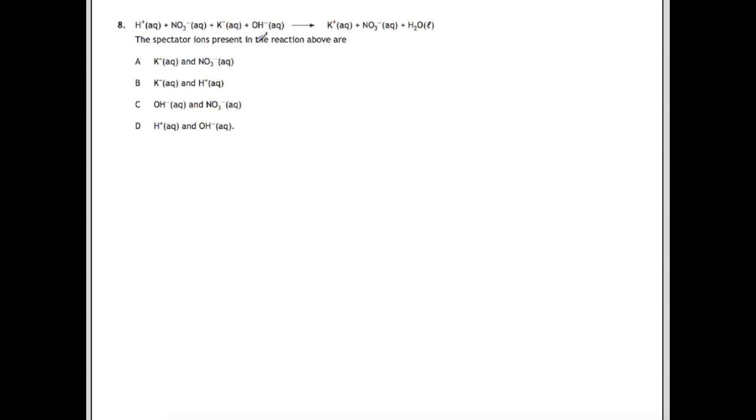Question eight. The spectator ions and the reaction above are. For spectator ions you're looking for things which are identical on each side of the arrow including their state symbols. Take each of them in turn and try and find them on the other side. We have H plus aqueous and we don't have an H plus aqueous over here. We have NO3 minus aqueous and NO3 minus aqueous, so there's one of our first spectator ions. K plus aqueous and K plus aqueous, there's our second spectator ion. OH minus aqueous and then we've got water being formed over here. Our two spectator ions are K plus aqueous and NO3 minus aqueous. That would give us an answer of A.